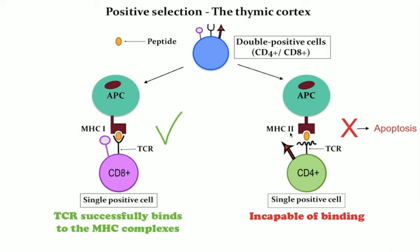Positive selection also determines if a T-cell will become a CD8+ or CD4+ T-cell. Specifically, if a TCR complex binds strongly to MHC class II, double positive cells eventually become CD4+ cells. Whereas thymocytes that interact well with MHC class I molecules mature into CD8+ cells. A T-cell becomes a CD4+ cell by down-regulating expression of its CD8 cell surface receptors, eventually becoming a single positive CD4+ T-cell. In sum, T-cells expressing TCRs capable of binding self-MHC on cortical epithelial cells will survive.